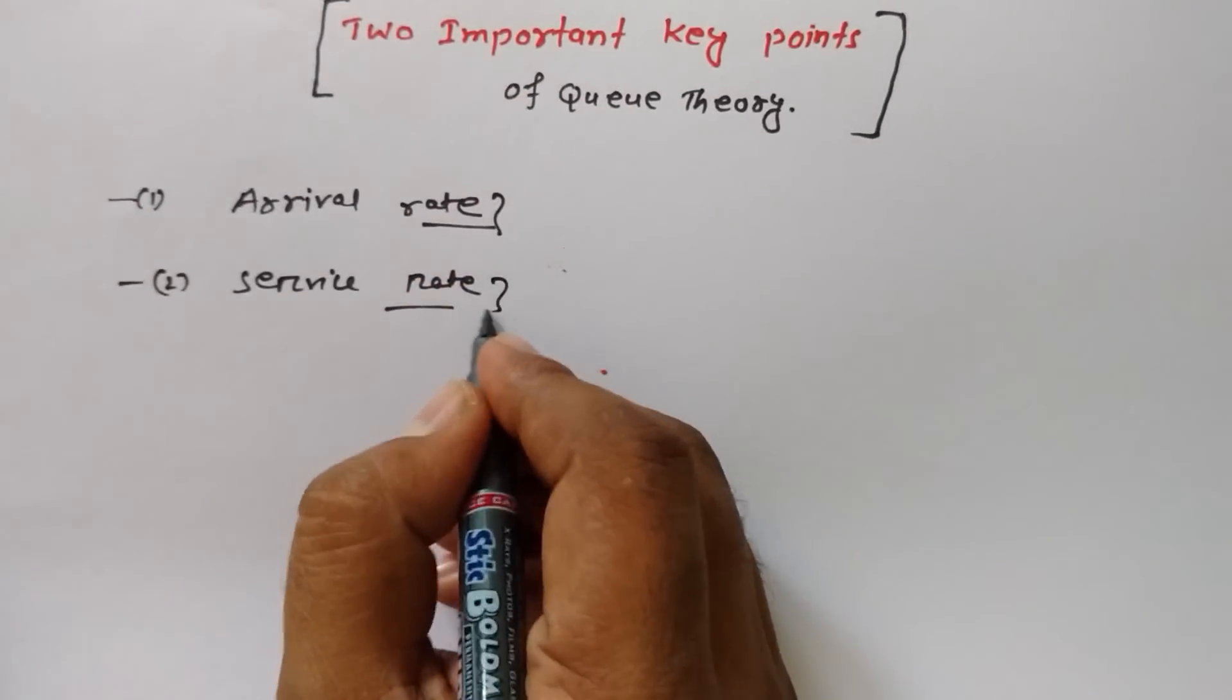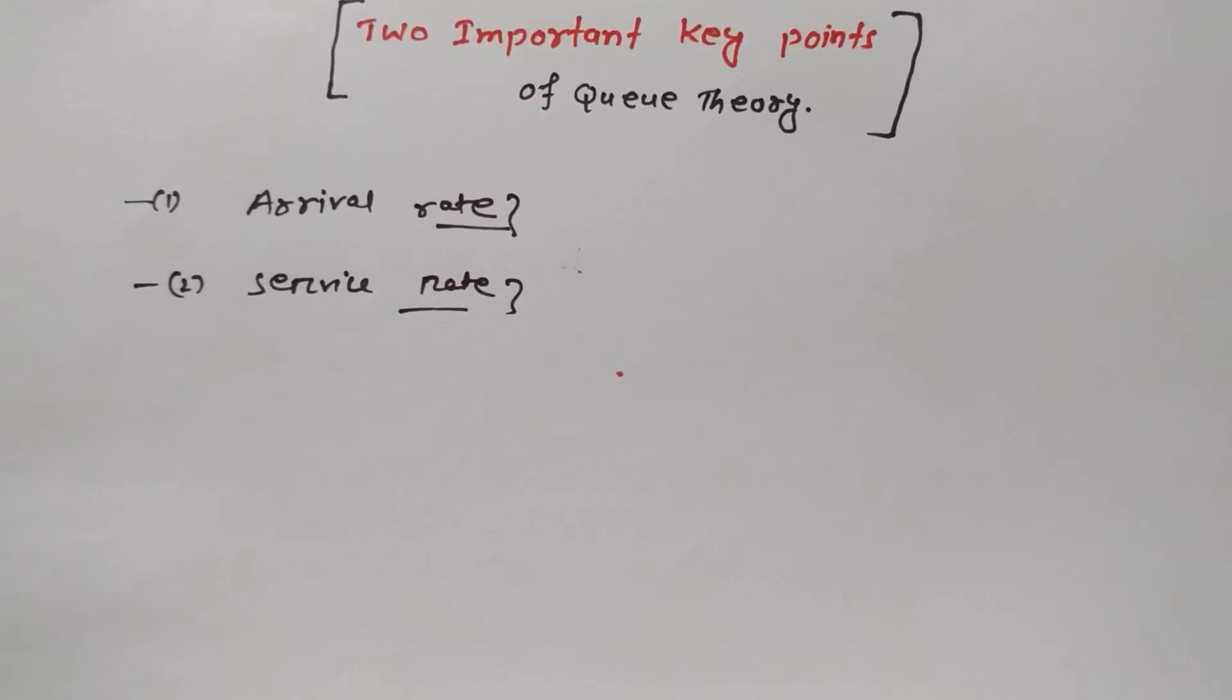Rate means we are relating arrival - how many people are coming per hour, per second, per minute. And the same case, how many people we can provide service to per second, per minute, per hour.